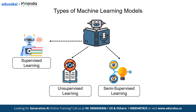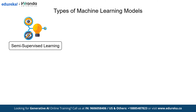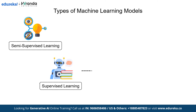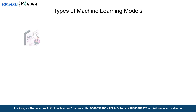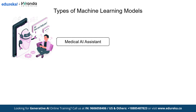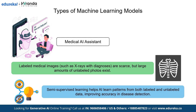Let's see how semi-supervised learning combines the best of both worlds. Semi-supervised learning bridges the gap between supervised and unsupervised learning by using a small amount of labeled data along with a large amount of unlabeled data. For example, in AI-assisted medical diagnosis, labeled medical images such as X-rays with diagnoses are scarce, but large amounts of unlabeled images exist. Semi-supervised learning helps AI learn patterns from both labeled and unlabeled data, improving accuracy in disease detection.